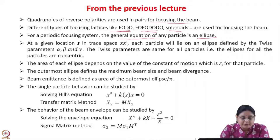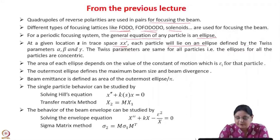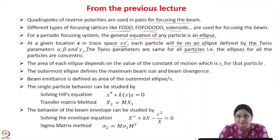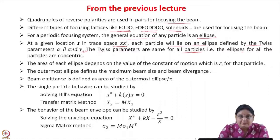At a given location s in trace space xx', each particle will lie on an ellipse defined by the Twiss parameters alpha, beta, and gamma. The Twiss parameters are the same for all particles — that is, ellipses for all the particles are concentric. Alpha, beta, gamma tell you about the shape and orientation of the ellipse, the beam size, divergence, and whether the beam is diverging or converging.